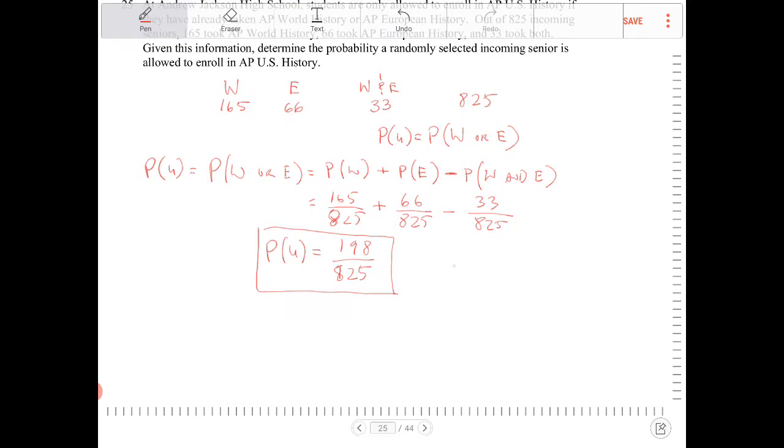And a visual way of thinking about this is, we have this Venn diagram, where in one group here is students who have taken World History. Another group here are students who have taken European History. And then overall are all the students altogether. There's 825 of them. So there's 165 here, and then there's 66 here, and then there's 33 there, right?